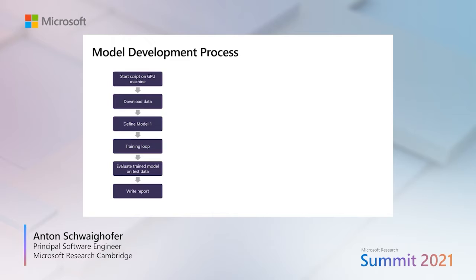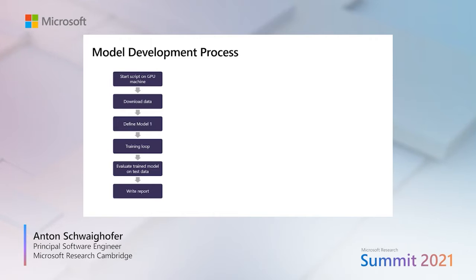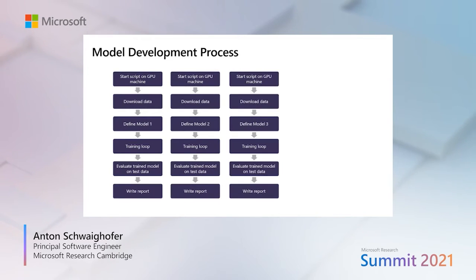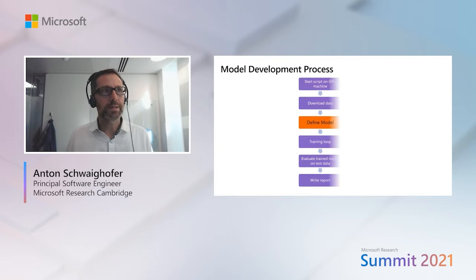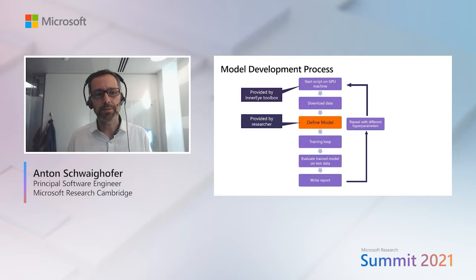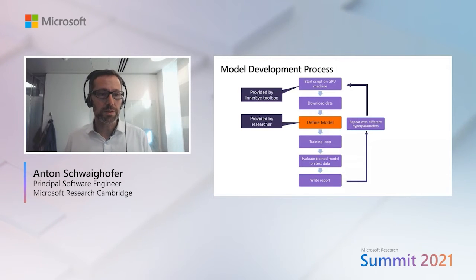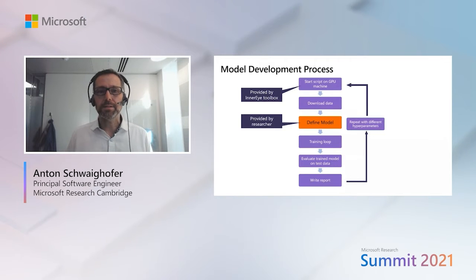Trying to illustrate here how the InnerEye toolbox comes into play with the model development process. Most of you who have built AI models know that you often start out with a script that downloads data, defines the actual model, runs the training loop, writes a report, and so forth. After a couple of training runs you tweak things and end up with multiple repetitive scripts, and if you're not careful you can end up with a pretty big mess. What the InnerEye toolbox does for you is provide all the boilerplate code — all the repetitive bits in model training. Everything highlighted in purple here comes from the InnerEye toolbox, and you as a researcher only bring in the thing that really matters: the model itself.